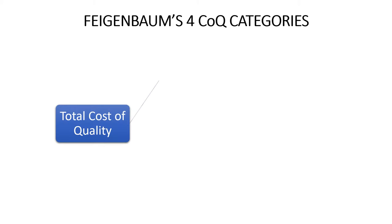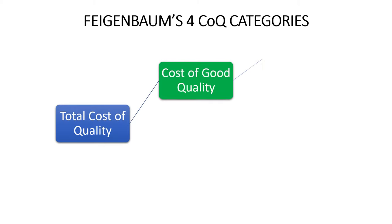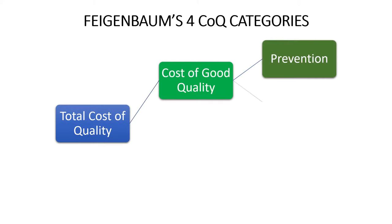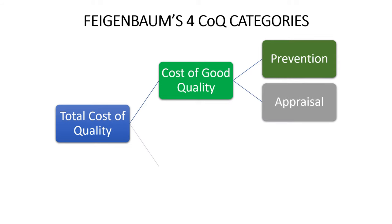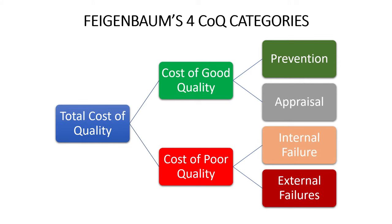In 1956, a guy named Armand V. Feigenbaum wrote a paper in the Harvard Business Review where he introduced the world to this idea of the cost of quality. In that article, he outlined four cost of quality categories that make up the total cost of quality.